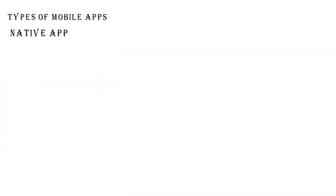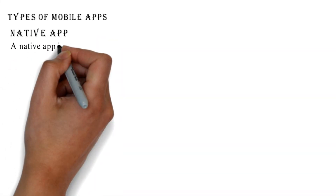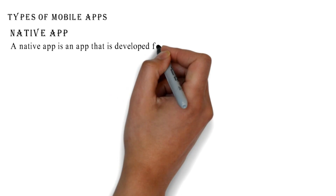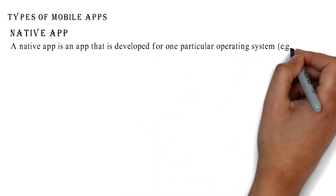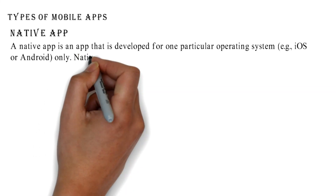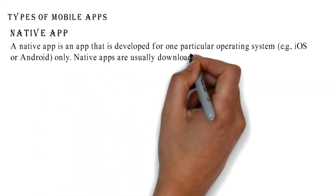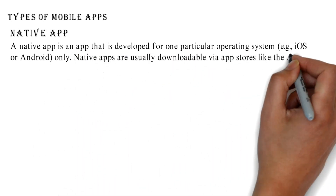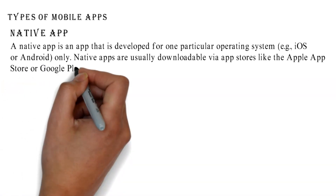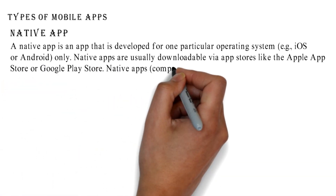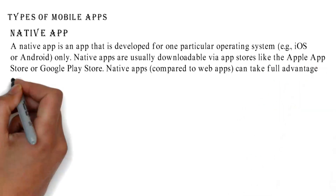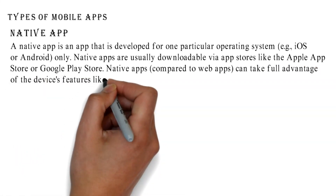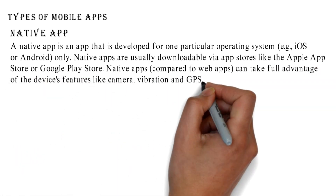Types of mobile apps: Native apps are developed for one particular operating system, e.g. iOS or Android only. They are usually downloadable via app stores like the Apple App Store or Google Play Store. Native apps, compared to web apps, can take full advantage of the device's features like camera, vibration, and GPS.